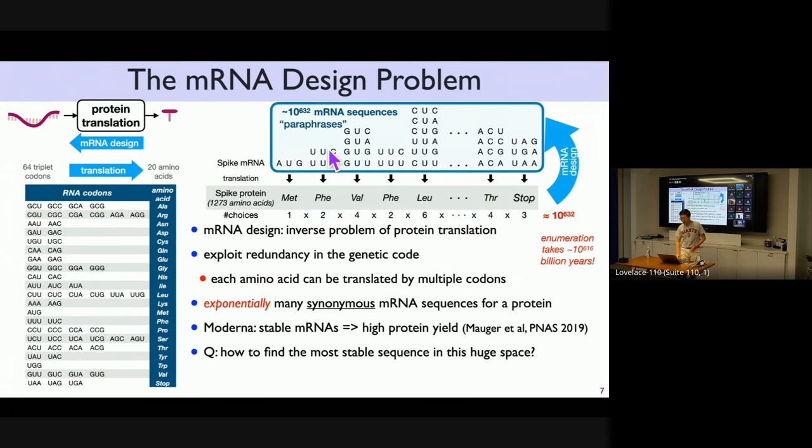But the design problem is the inverse problem of that. What kind of mRNA sequences can translate to this spike protein? That problem becomes non-deterministic because of the redundancy in the genetic code. So you have only 20 amino acids, but you have 64 triplet codons. Each one has sometimes one or sometimes two or three or four or five or six different codons. If you multiply the number of choices altogether, you got 10 to the power of 600 something, which is more than the atoms in the universe. You couldn't finish before the universe ends. And each one of them are all paraphrases, meaning they are synonymous.